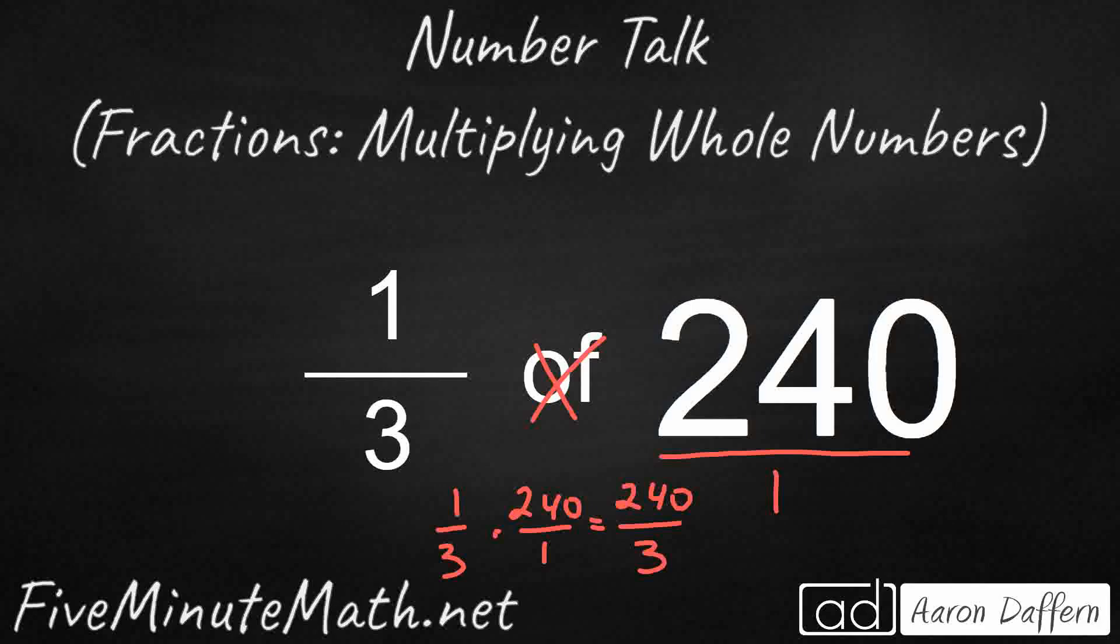Another way that we can think about this is if we know that multiplying by a whole number is the same as dividing by its reciprocal. Now, how do I know that 3 is the reciprocal? Well, a reciprocal of a number is any number that you can multiply by in order to get it back to 1.